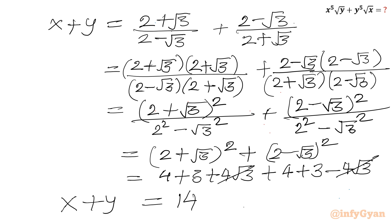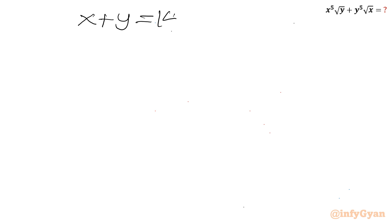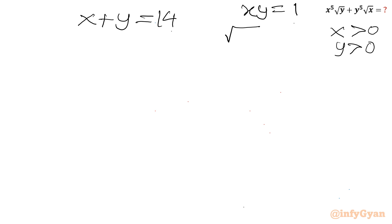xy is 1 and it is said to find out this expression. x plus y is 14, xy is 1. Obviously x is positive and y is positive, so we can consider roots also. xy is 1, so root xy will be equal to square root of 1, which will be 1.